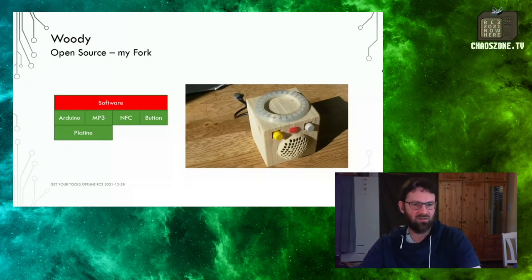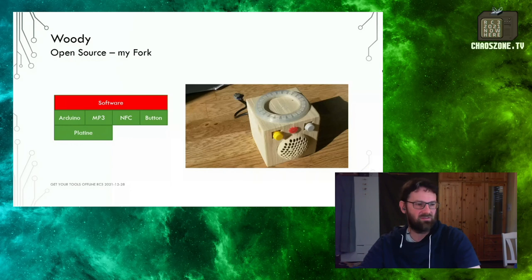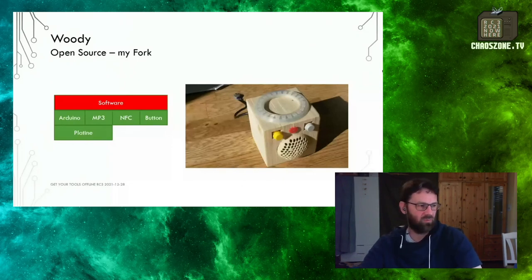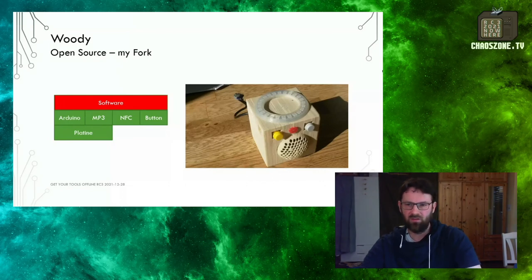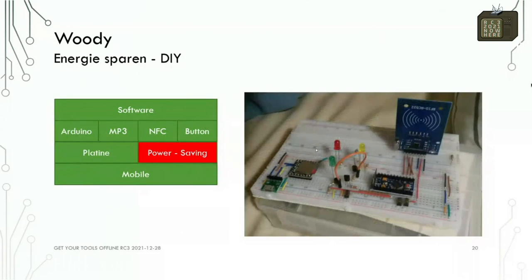Now we are leaving beginner territory — now it's about making your own stuff. The beginning is that you start doing things locally, and then you can work on it and make the changes you want. Another point was saving energy: I can turn on and off individual modules. This is a very simple way of doing it with transistor cascades. Everything can turn itself on and off to save power, because the MP3 module takes a lot of power on its own.